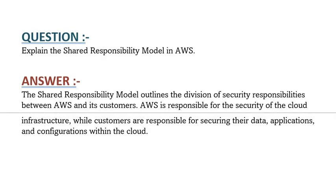Our next question is, explain the shared responsibility model in AWS. The shared responsibility model outlines the division of security responsibilities between AWS and its customers. AWS is responsible for the security of the cloud infrastructure, while customers are responsible for securing their data, applications and configuration within the cloud.